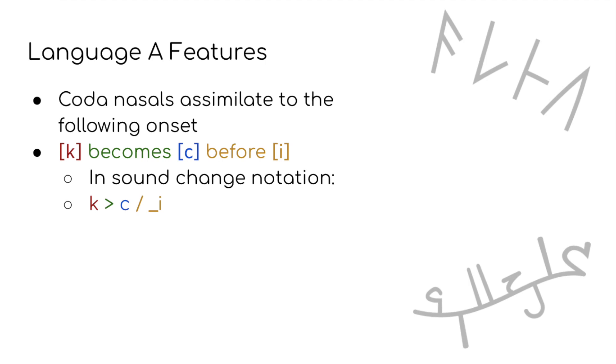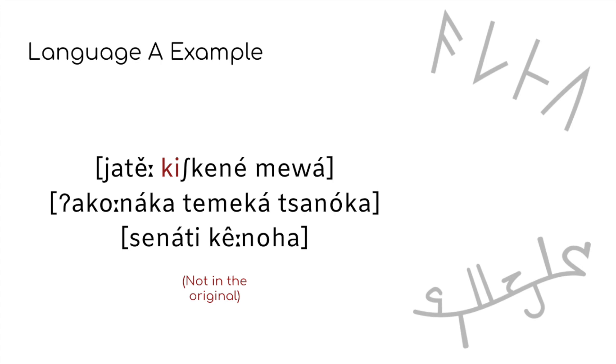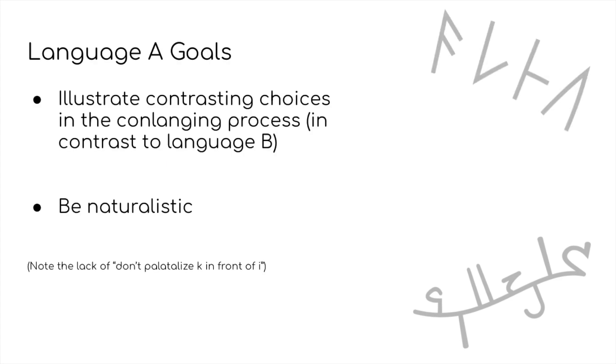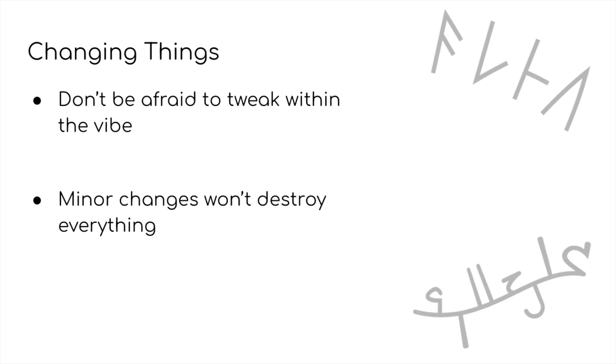Here, the greater than sign indicates a change, and the slash and what comes after shows the condition that causes the change, in this case, being before an I. But wait. If we look back at our first example of language A, we see that there's a K in front of an I, and we don't have this allophony. However, seeing as changing this doesn't really change the vibe, we can just go back in and change it. Something important to keep in mind during the conlang process is that it's okay to change things. Not having K palatalize in front of I wasn't one of the goals that we set, and since it sounds fine and I like it, we can just add that in. We can always keep tweaking within the general vibe we've created until we get something refined that we're satisfied with.